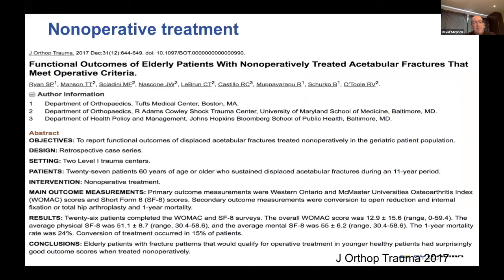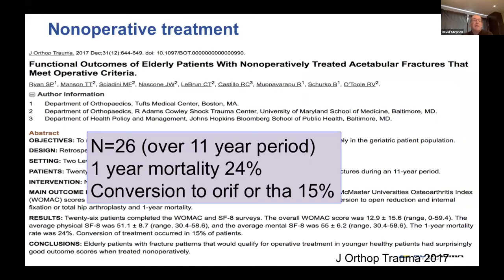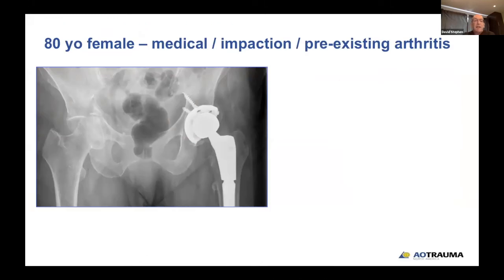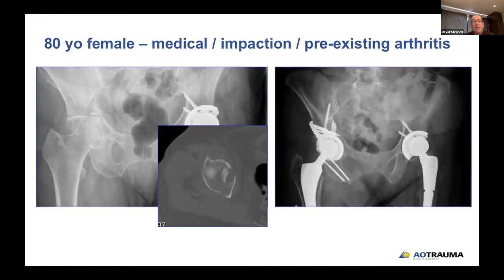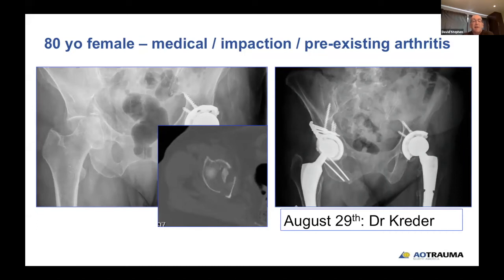Non-operative treatment is very rare. A study from shock trauma over an 11-year period treated 26 cases. In our institution, we may consider this only when patients have a virtual medical contraindication to surgery, or when they are older patients who can only withstand one operation, have medical issues, impaction, femoral head problems on imaging, and pre-existing arthritis. You'll hear more from Dr. Kreider in two weeks regarding this treatment strategy.